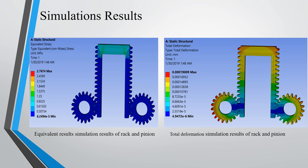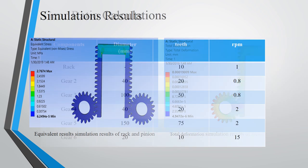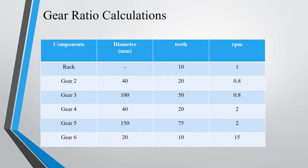Here are the simulation results: equivalent stress simulation of the rack and pinion, and on the other hand, there are the total deformations. The gear calculations are mentioned here. There are dimensions like diameters and teeth mentioned, and the RPMs are mentioned here.